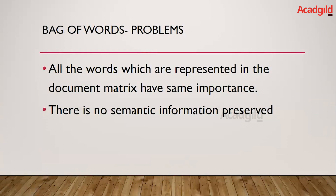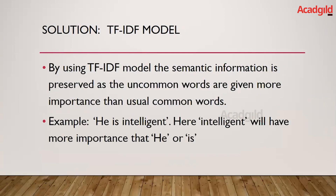These are the two basic problems with bag of words. The solution is the TF-IDF model. Using TF-IDF, semantic information is preserved as uncommon words are given more importance than common words. For example, in the sentence 'he is intelligent,' 'intelligent' will have more importance than 'he' or 'is'.